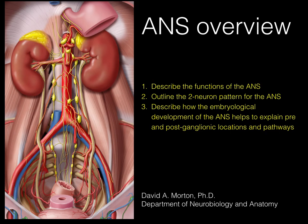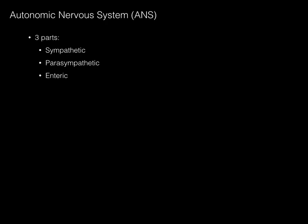ANS stands for autonomic nervous system. The autonomic nervous system has three parts: sympathetic, parasympathetic, and enteric. The focus of this lecture is going to be on sympathetic and parasympathetic.